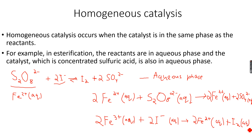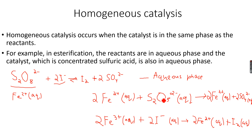In the first reaction, the Fe²⁺ ions react with S₂O₈²⁻ ions. The Fe²⁺ ions are oxidized to Fe³⁺ ions and the S₂O₈²⁻ ions are reduced to sulfate ions.